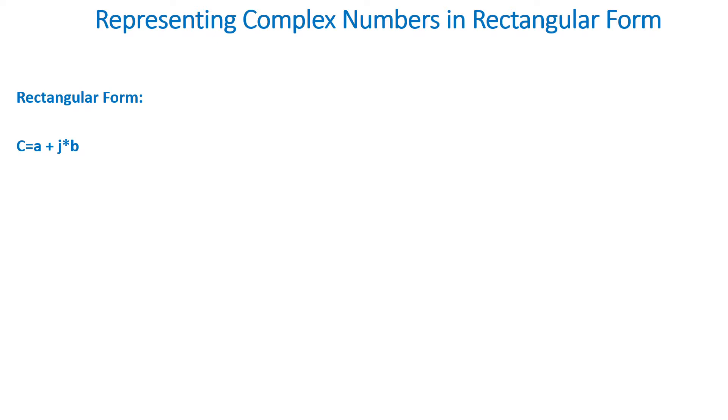Basically, a rectangular form is in the format of C equals A plus j times B, where A and B are real numbers, and j squared equals minus 1, or j equals the square root of minus 1.